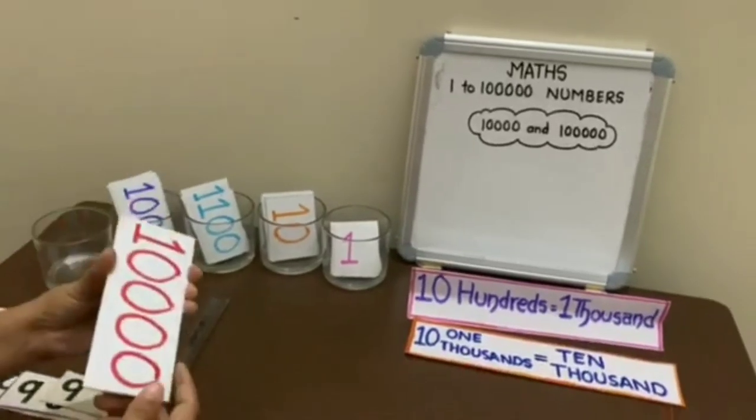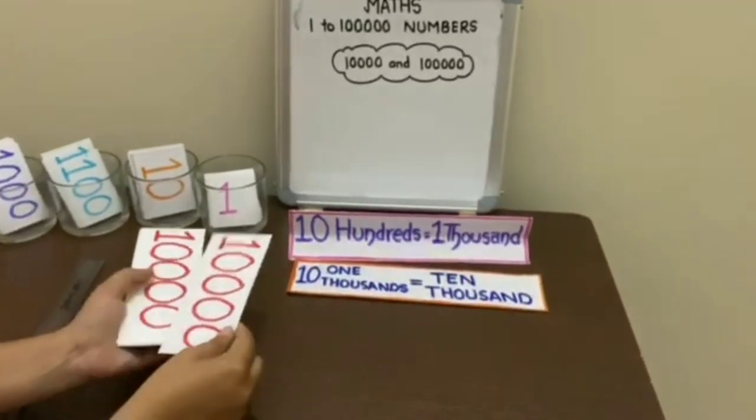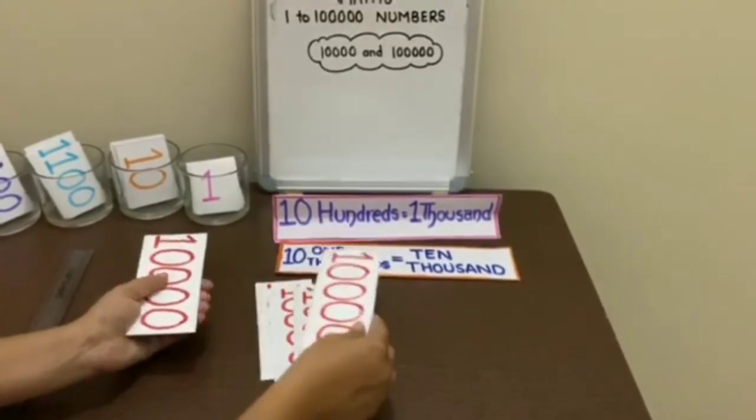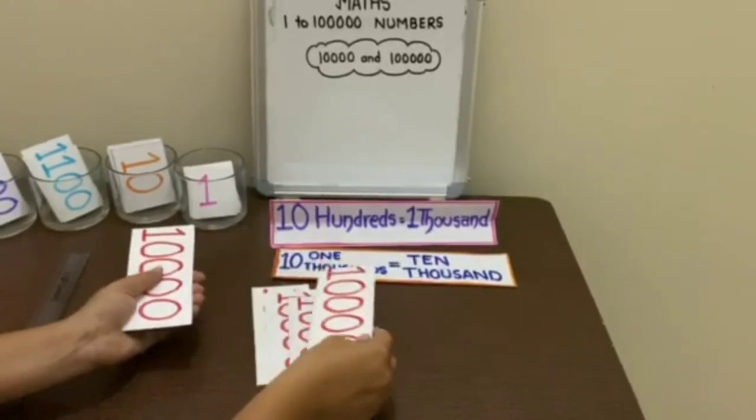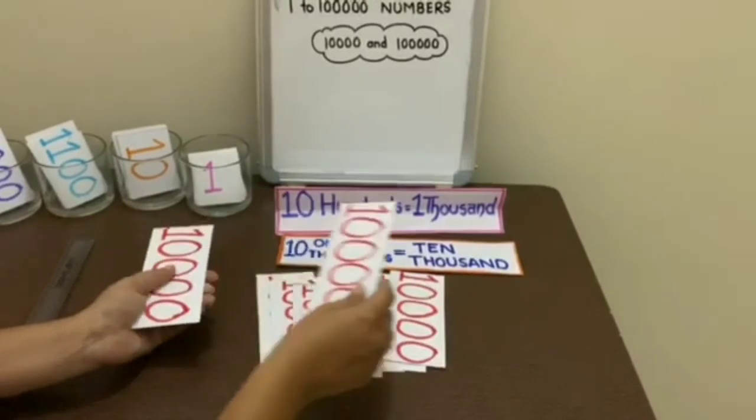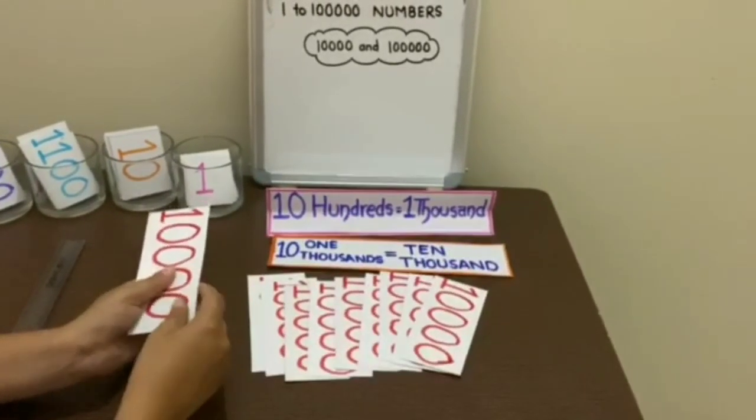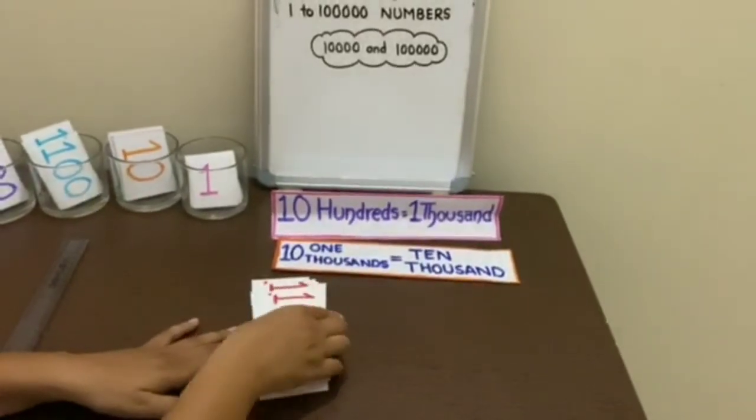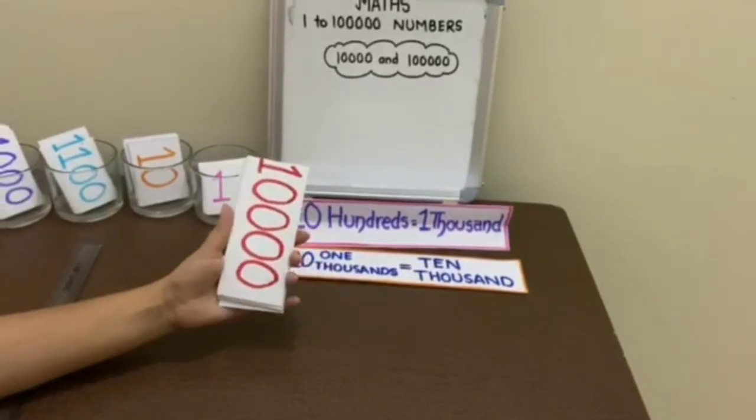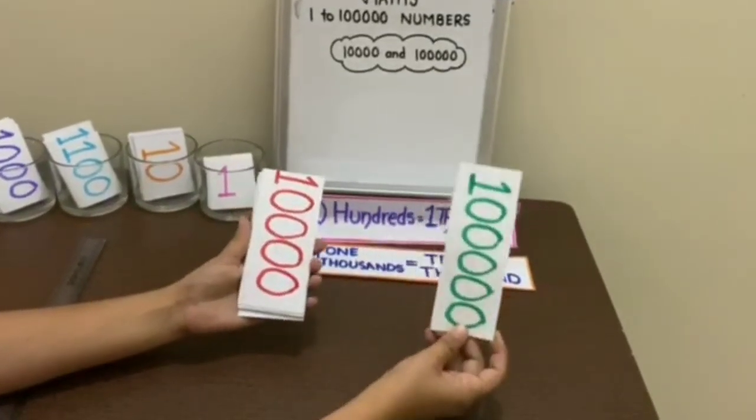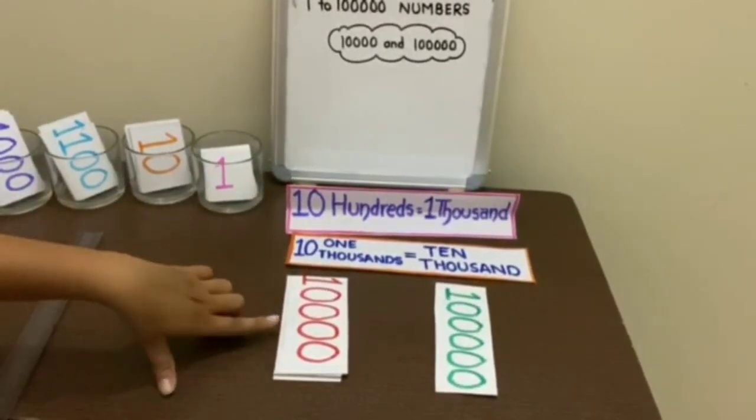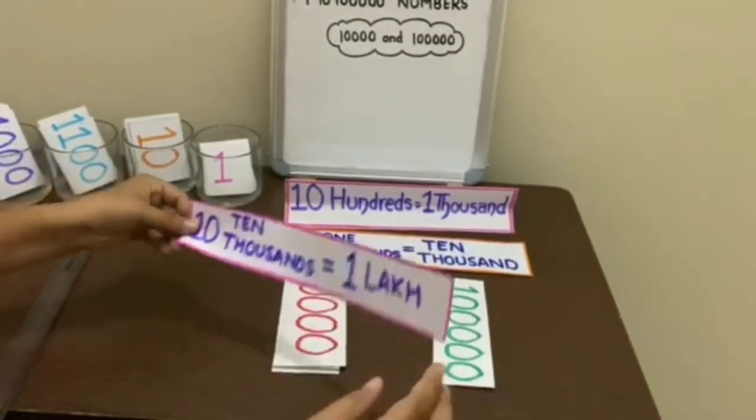Let us count some 10,000 flashcards: 10,000, 20,000, 30,000, 40,000, 50,000, 60,000, 70,000, 80,000, 90,000, and 1 lakh. So instead of taking 10 flashcards of 10,000, we will take a single flashcard of 1 lakh, which means 10 ten-thousands equal 1 lakh.